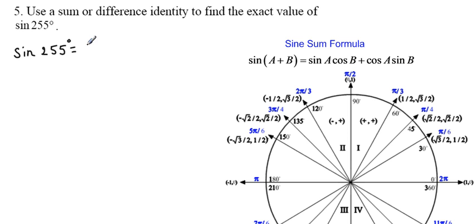So the first thing we'll do is rewrite the sine of 255 degrees as the sine of 210 degrees plus 45 degrees. Now, like I said, we're going to use the sum formula for sine.